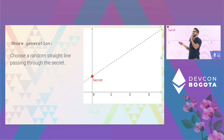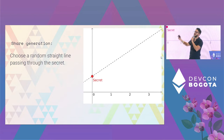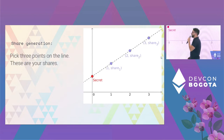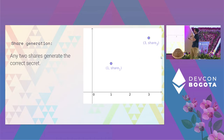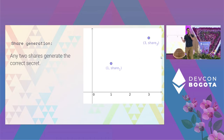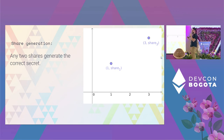We choose a random straight line that passes through the secret. We use a straight line because this is the simplest case where only two pieces are needed for reconstruction — for more pieces you'd use a parabola or higher-order polynomial. You then pick three points on that line, and those points become your shares. Lines have the nice geometric property that any two points on a line uniquely determine it, which means any two shares are enough to reconstruct the secret.